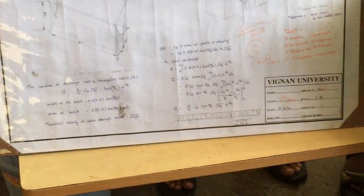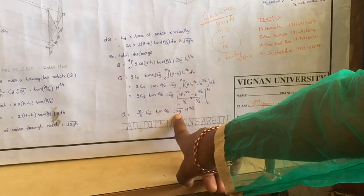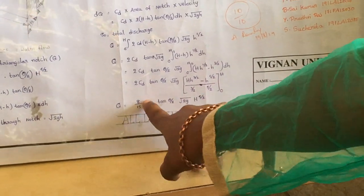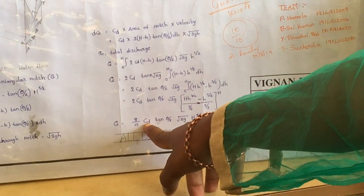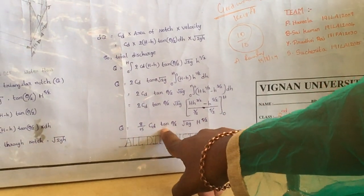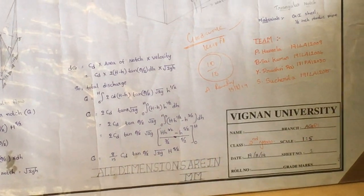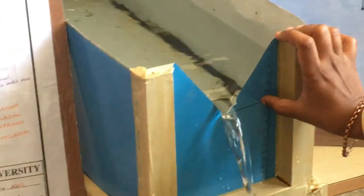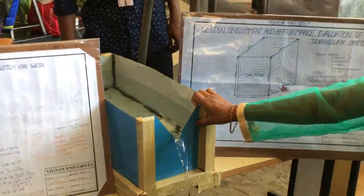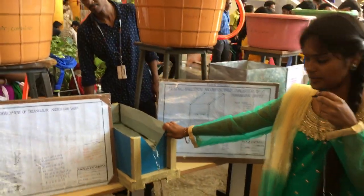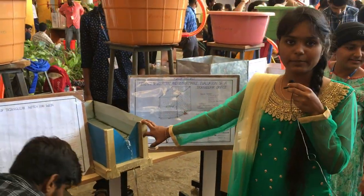For the calculation, the formula is (8/15) × Cd × tan(θ/2) × √(2g) × H^(5/2). The value 8/15 is constant, Cd is taken as 0.6, and we take the measurement from the head to the upper level of the triangular notch, which is about 3 to 4 centimeters. The discharge is about 1 liter per minute.